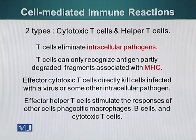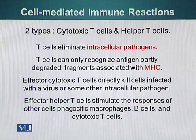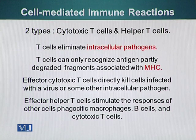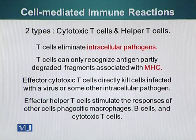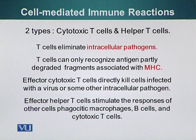Cytotoxic T cells can eliminate intracellular pathogens. These T cells recognize antigen which is partly degraded and present as short small fragments on the surface of cells, displayed with the help of MHC — Major Histocompatibility Complex. Effector cytotoxic T cells directly kill cells infected with a virus or other intracellular pathogen. Effector helper T cells stimulate the responses of macrophages, B cells, and can also regulate cytotoxic T cells. This is the cellular part of immunity.